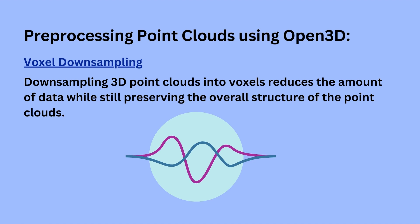One of those pre-processing techniques we mentioned earlier is downsampling, and we will be taking a look at voxel downsampling. As mentioned in our previous video in this series, voxels are similar to pixels in an image and are abstracted 3D units with predefined volumes, positions, and attributes. In 3D point data, they are like a topological representation of an object in 3D.